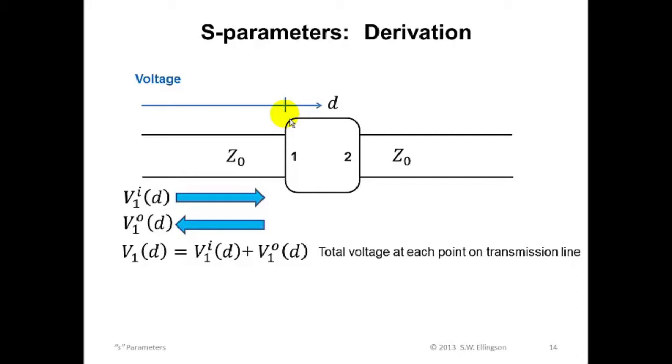Unless the input impedance looking into port one is exactly Z0, we also expect to see a leftward traveling or reflected wave as shown here. Let's call this voltage reflected wave V super O, O for output, sub one, one for port one as a function of d.